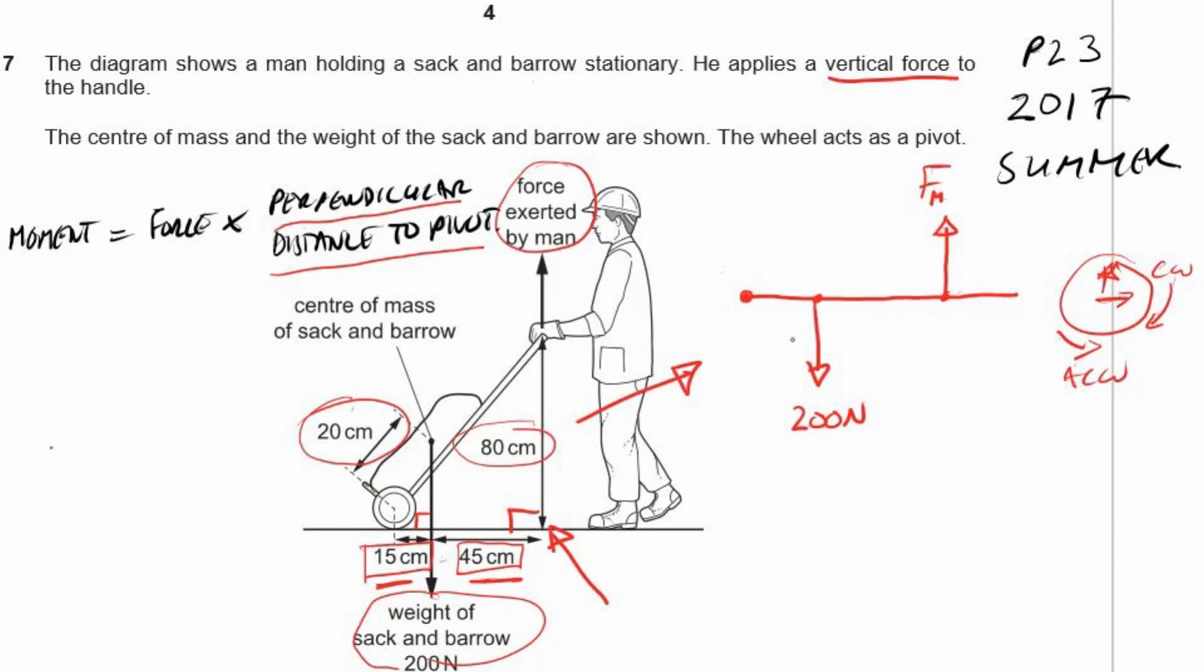And then we can calculate out what value it should have. Here we know that this distance to the pivot here is 15 centimetres. And we know the distance between these two points is 45 centimetres. There we go. So we've got one distance here between the 200 newtons and the pivot. So we'll label the pivot as well while we're here.